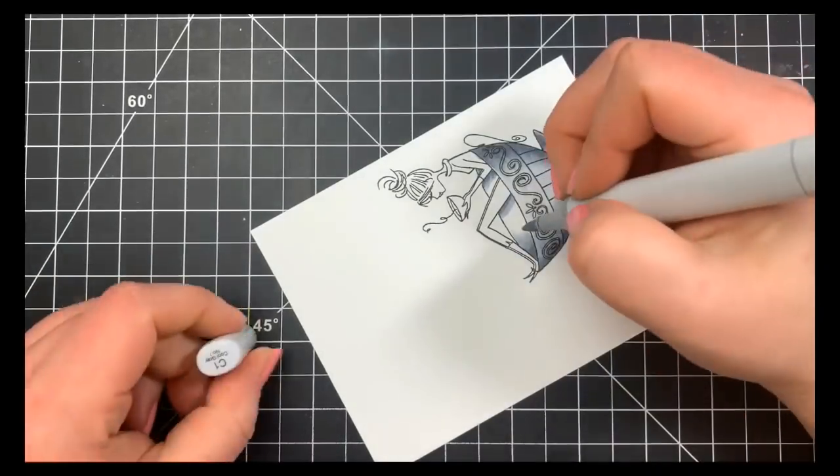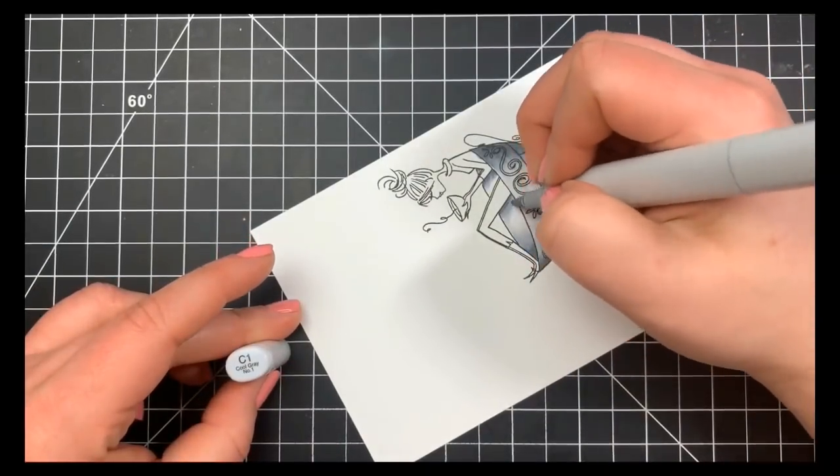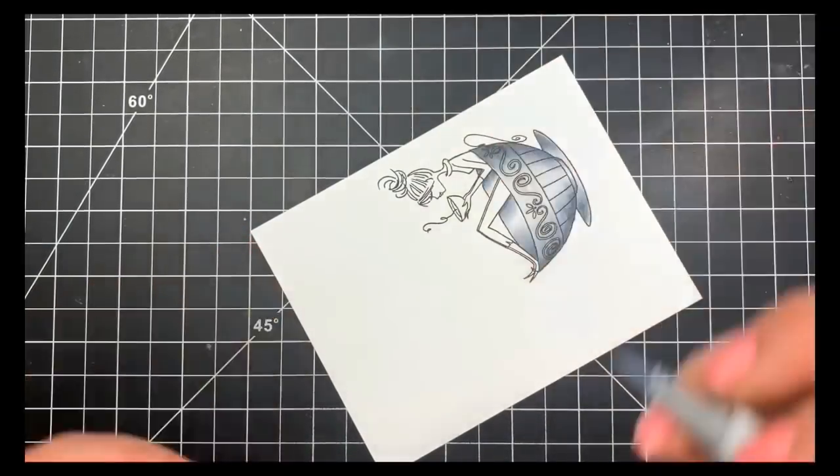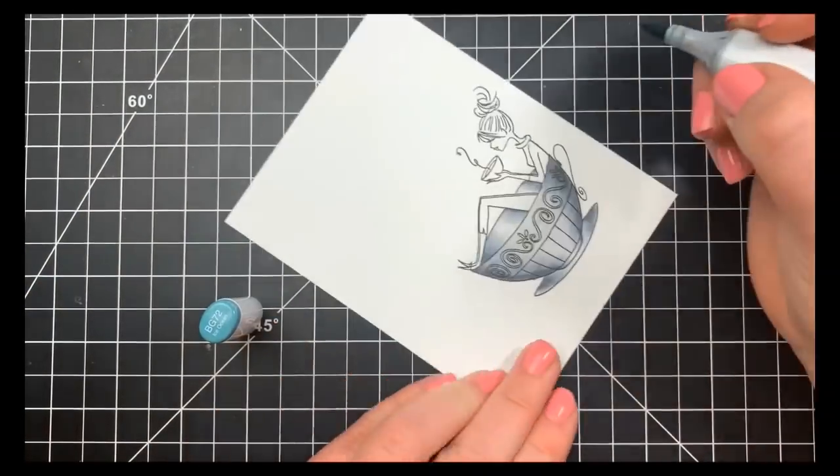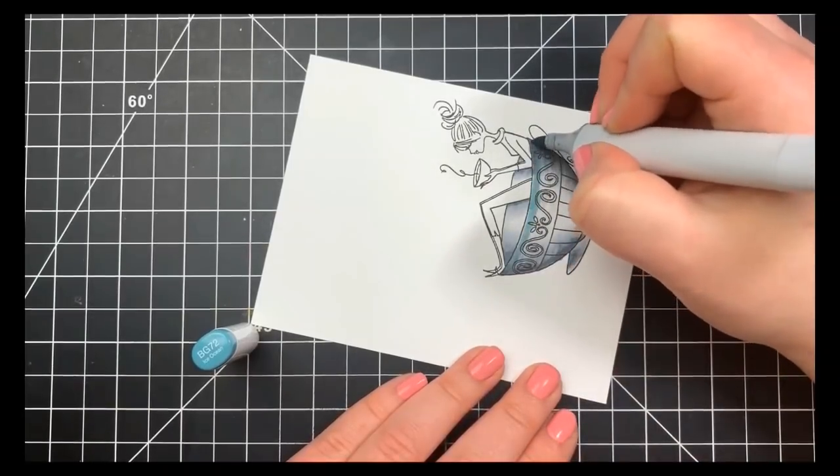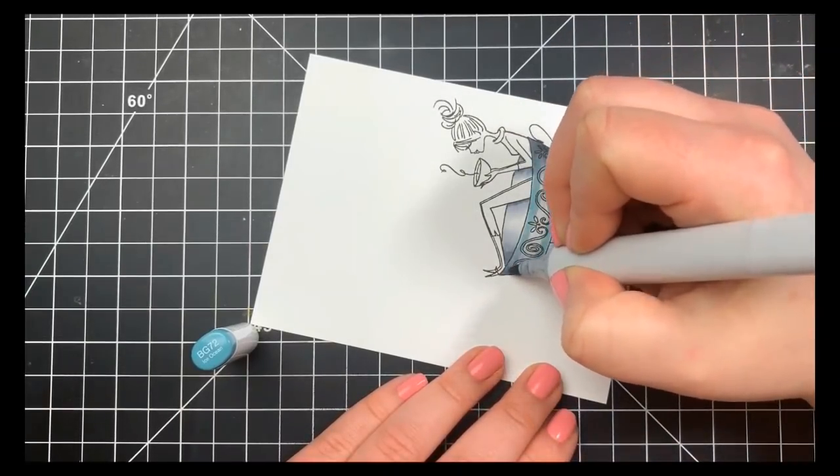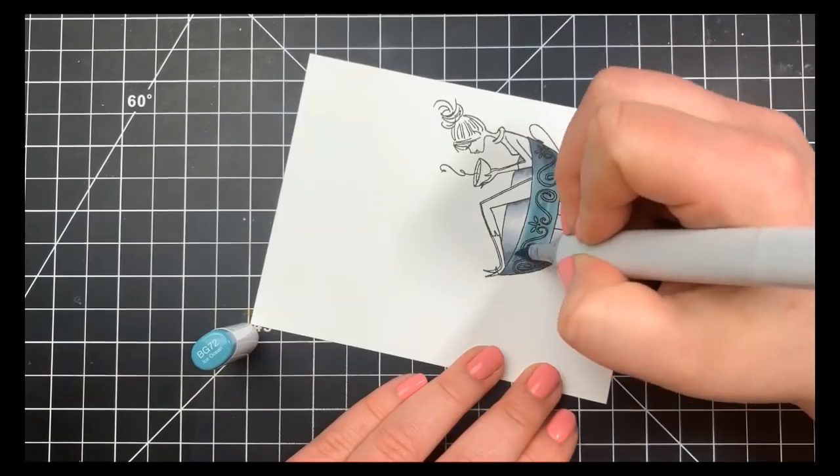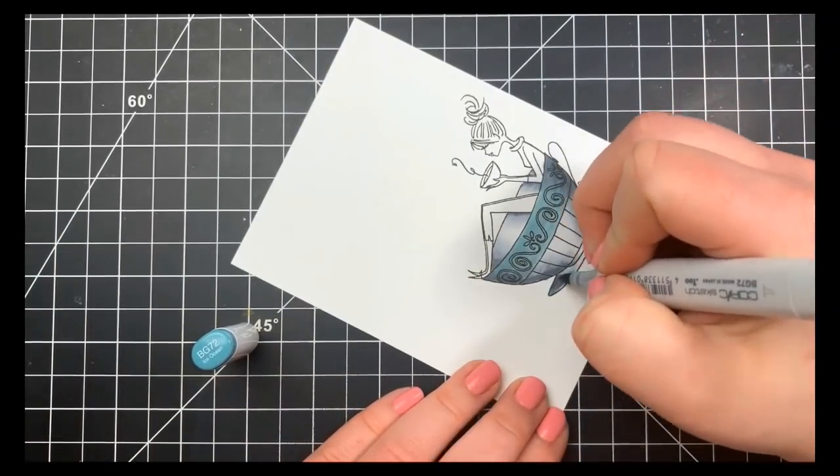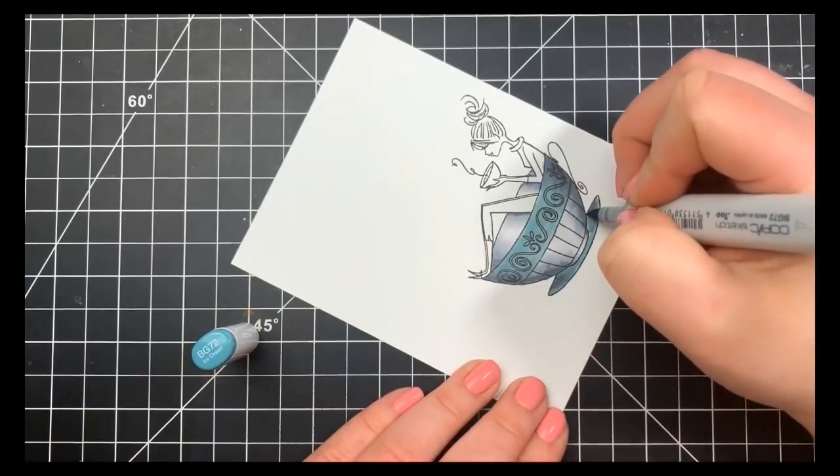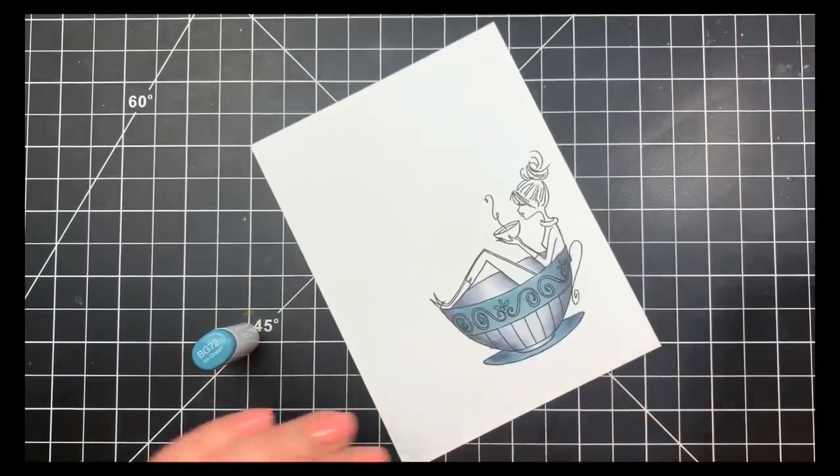Then we'll go ahead and add color to the cup. I wanted a couple of different colors on here and didn't want to have to worry about doing the shading. So I'm going to color these areas in solid. For the BG72, I'm covering up the entire top part of this cup and you can see that you still have that shading underneath from where we added the cool gray markers.